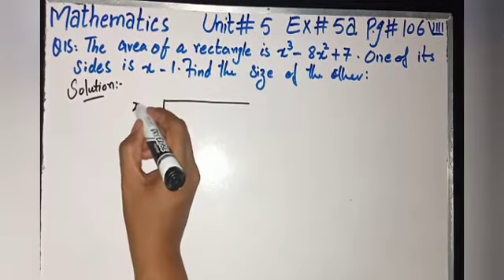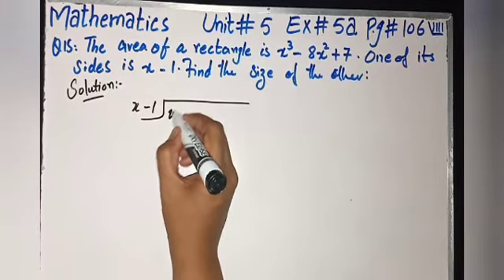So apply division to find the area divided by x - 1. Total area is x³ - 8x² + 7.